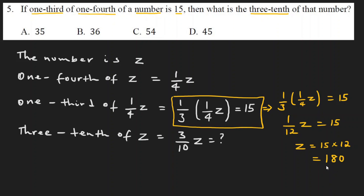One fourth of Z is equal to 15, so the number Z is equal to 180. One third of Z does not regenerate the result.